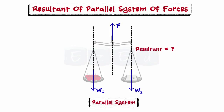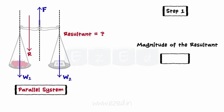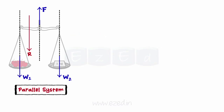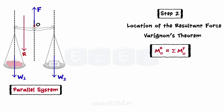To find the resultant of a parallel force system, the following steps must be followed. We simply add them up using a suitable sign convention for the direction of the force; that is, the resultant is equal to the summation of all the forces. To find the location of the resultant force, we use Varignon's theorem. The resultant is usually assumed to act either to the left or right of the reference point at a perpendicular distance d.